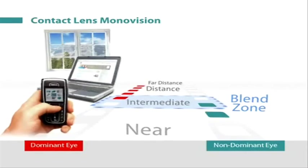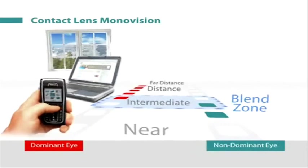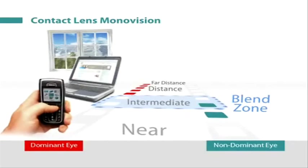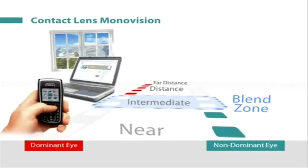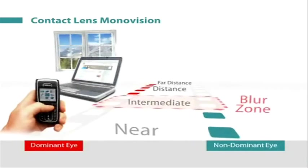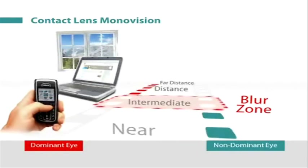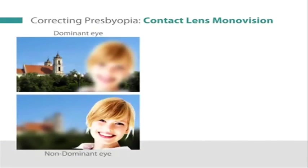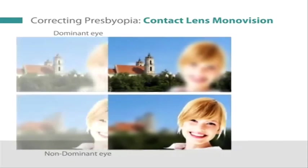This means that the near eye needs to be more myopic for the patient to read comfortably, and leaving a gap between the range of vision of the two eyes. This replaces the intermediate blend zone with a blur zone.